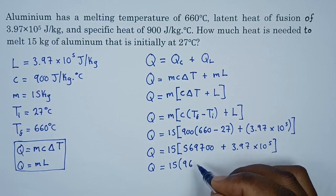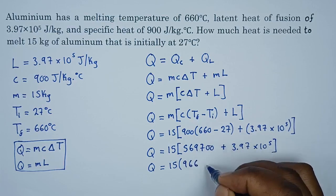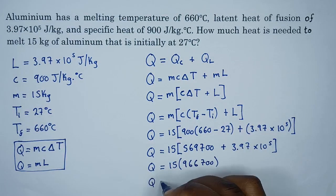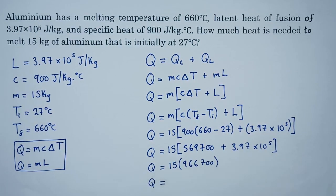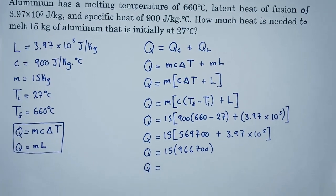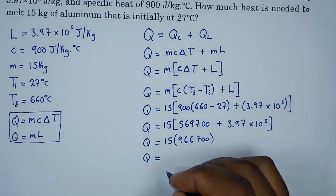Then multiplying by the mass which is 15, what do we obtain? So let's quickly do this. What kind of value do we get? 14 million, 500,500.